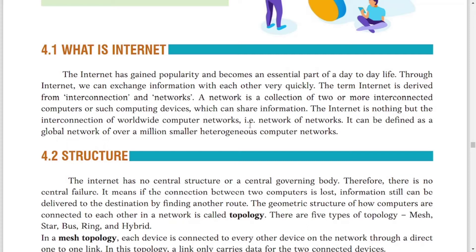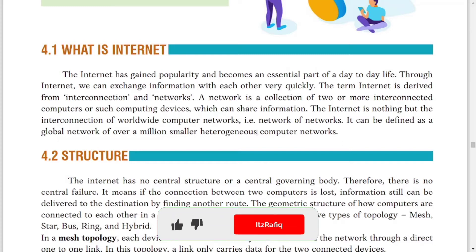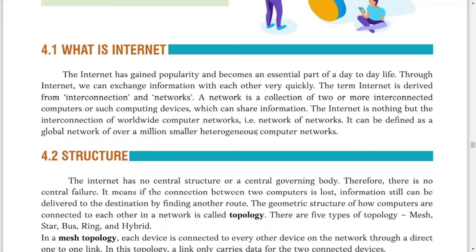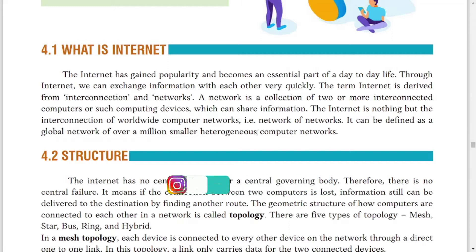Internet has gained popularity because it is an essential part of our life. Through internet we can exchange information very quickly — through WhatsApp we can send messages very quickly. A network is a collection of two or more interconnected computers or any other digital device. Internet is nothing but the interconnection of worldwide computer networks, and it is also called a network of networks. It can be defined as a global network over millions of smaller heterogeneous computer networks.